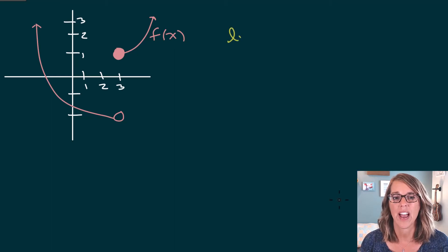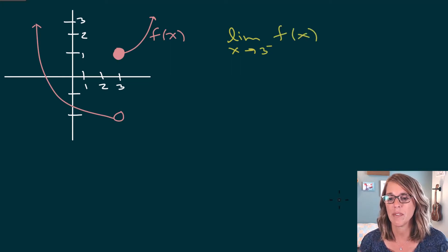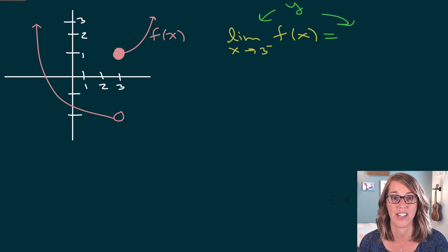The first limit that we want to look at is the limit as x approaches 3 from the left of our function. When we're looking for these limit values, we are looking for the y value. The answer that we're getting is going to be the y value that my graph is approaching.